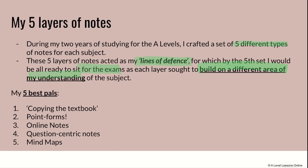Each different set of notes would address a different need within a container of content. For example, if you're looking at a concept like market failure — all the different externalities, the different public goods — each different layer of notes would seek to address a different area within that category. My five layers were: first, copying the textbook; second, point forms; third, online notes; fourth, question-centric notes; and fifth, mind maps. I think a lot of people hate mind maps, but I'll show you why they can be fun and how to go about doing them.